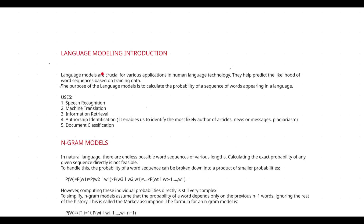Just as humans can guess the next word through practice with a language, for systems we train them to predict what comes next in a sentence. This is how a language model works: first it is trained, and then it predicts what word comes next. The purpose of language models is to calculate the probability of a sequence of words appearing in a language, which is done using n-gram models.